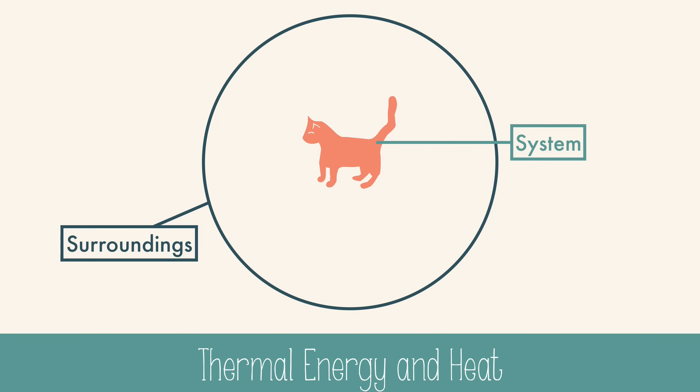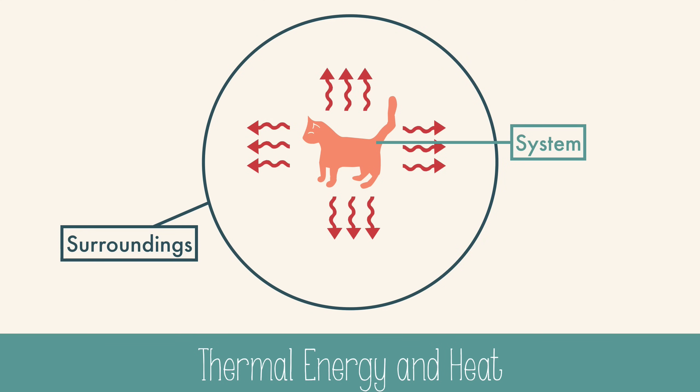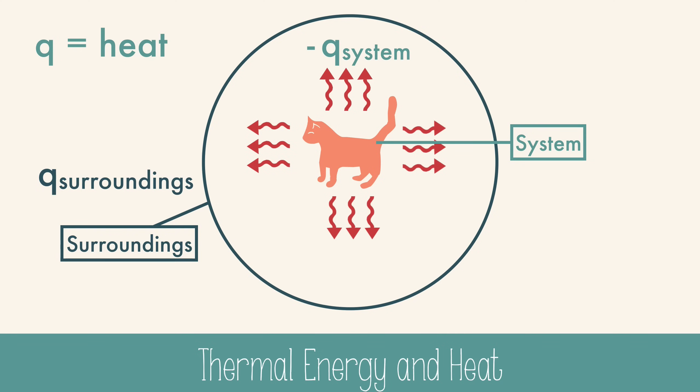This cat is alive and metabolizing the food that it ate, and it's giving off heat, which goes from the system to the surroundings. The cat is giving away its heat, or losing its heat, so we say that the Q is negative. The Q of the surroundings is absorbing the heat that the cat is releasing, or gaining heat, so it's positive.